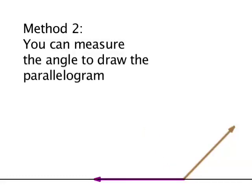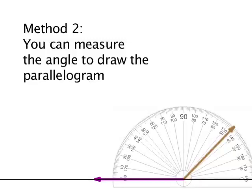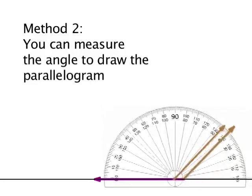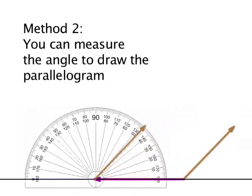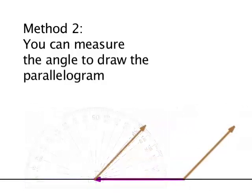Let's look at the second method. You can measure the angle to draw the parallelogram using the protractor. Move the vector at the same angle tip to tail. Finish the parallelogram and, like before, draw in your resultant.